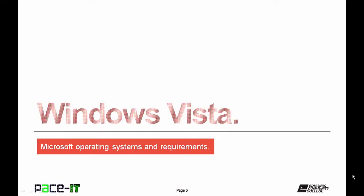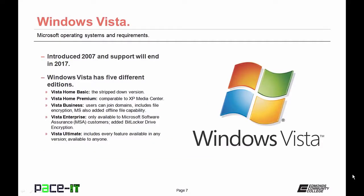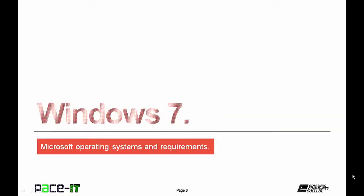Now let's move on to Windows Vista, introduced in 2007 — support for it ends in 2017. Windows Vista has five editions: Vista Home Basic is the stripped-down version; Vista Home Premium maps to XP Media Center; Vista Business allows users to join domains, added file encryption, and Microsoft also added offline file capability; Vista Enterprise was only available to Microsoft Software Assurance (MSA) customers, adding BitLocker drive encryption — whole drive encryption; Vista Ultimate has every feature available in any edition.